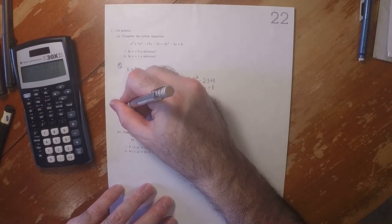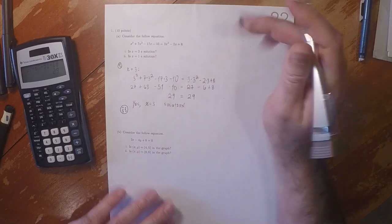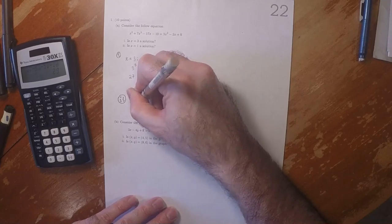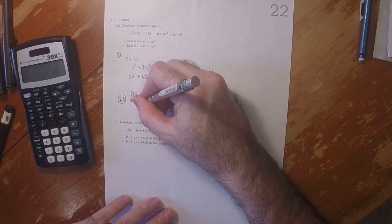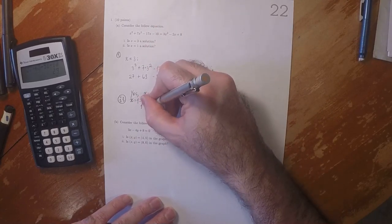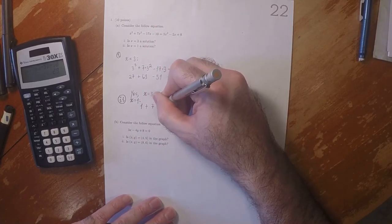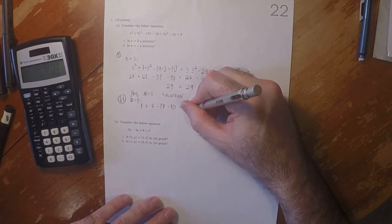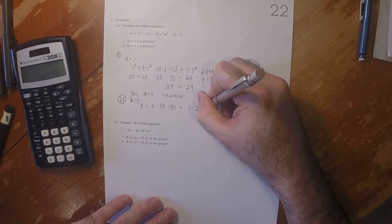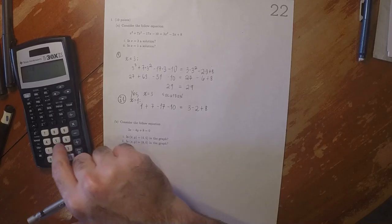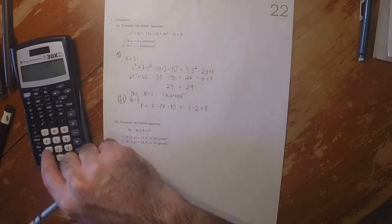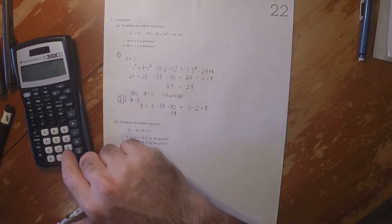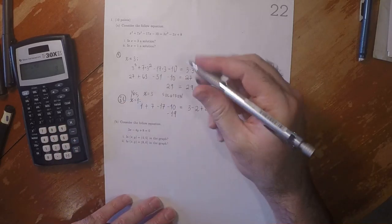In part ii, we can ask about x equal to 1, which is far easier. The arithmetic, anyway. 1 plus 7 minus 17 minus 10 equal to 3 minus 2 plus 8. So 1 plus 7 minus 17 minus 10 is negative 19. And then 3 minus 2 plus 8 is 9.